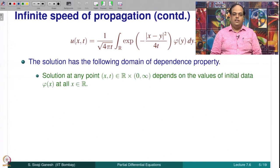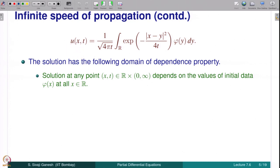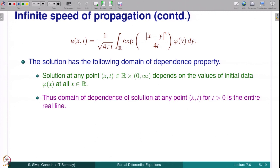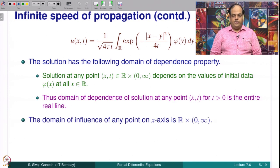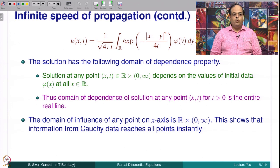The solution at any point (x,t) depends on the values of the initial data phi(x) at all x in R — that is visible from this integral. All the values of phi are used to find u(x,t) at any point. Thus the domain of dependence of the solution at any point (x,t) is the entire real line, because all the values of phi(y) for y in R matter in determining the solution at any point x and at any time t > 0.